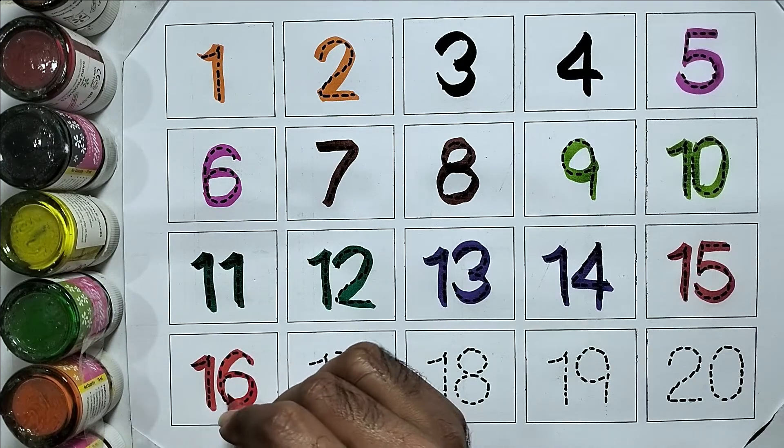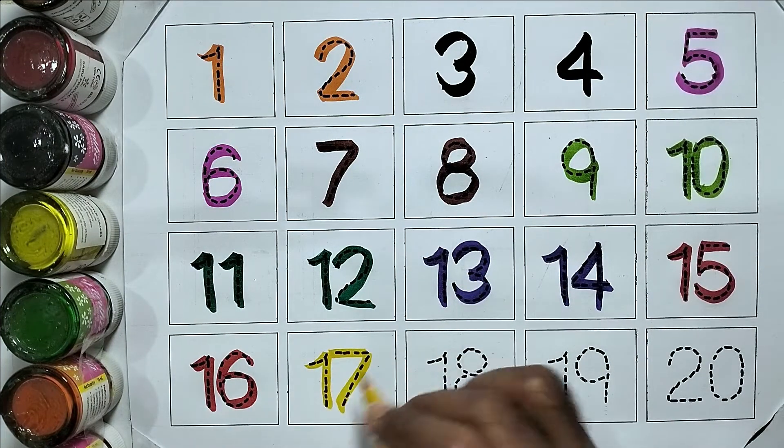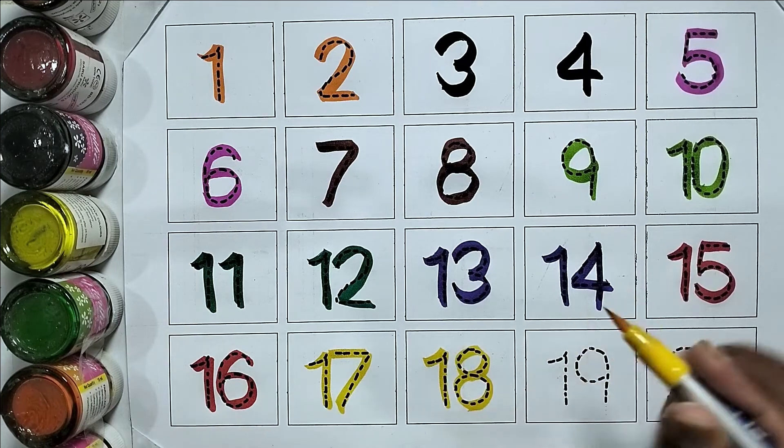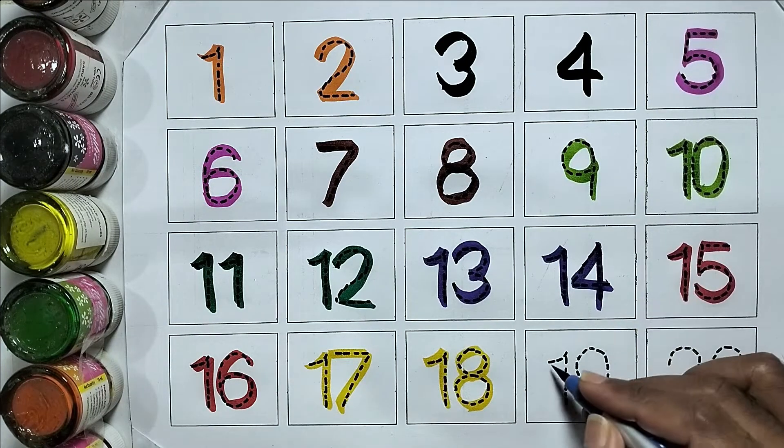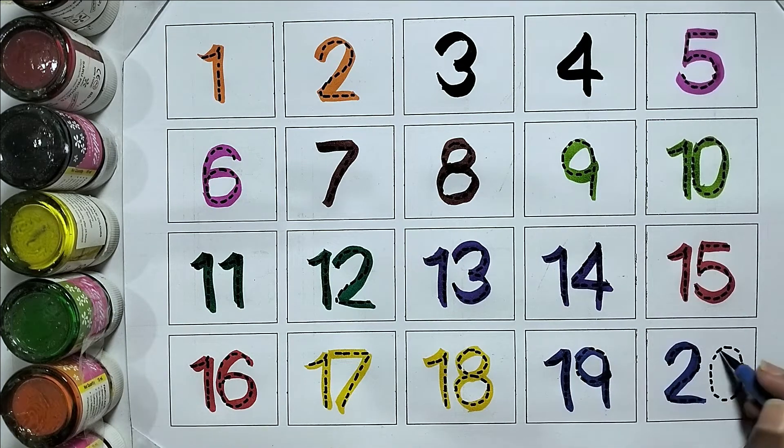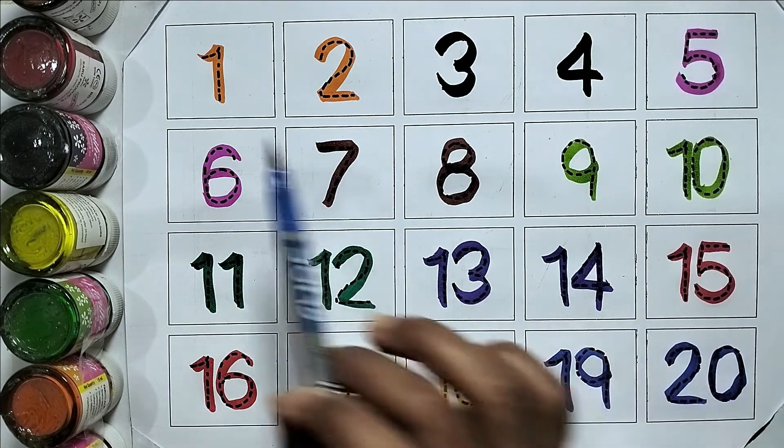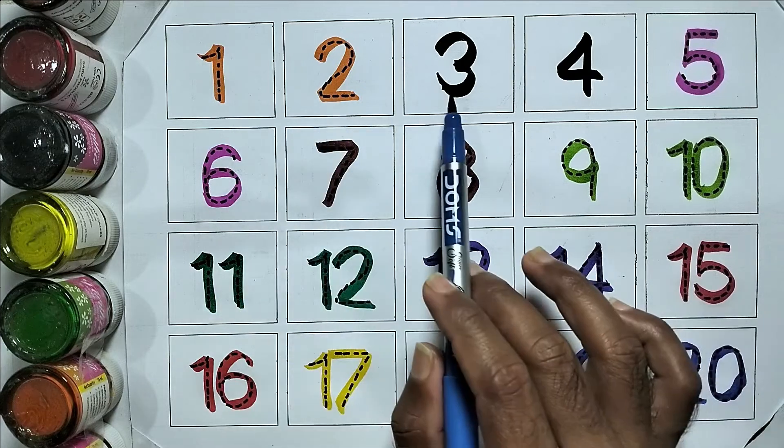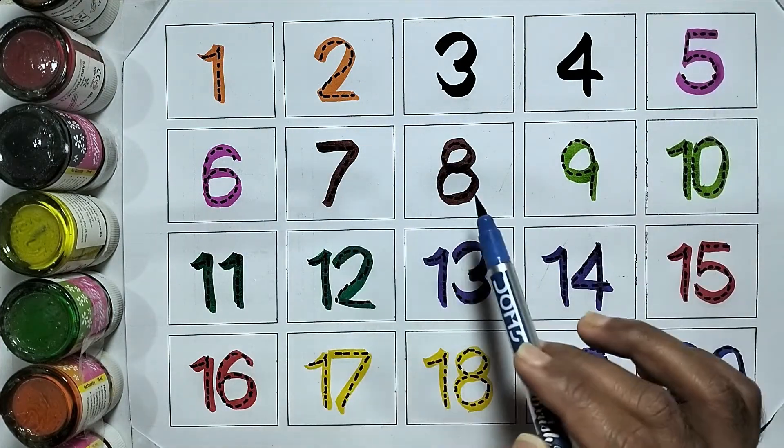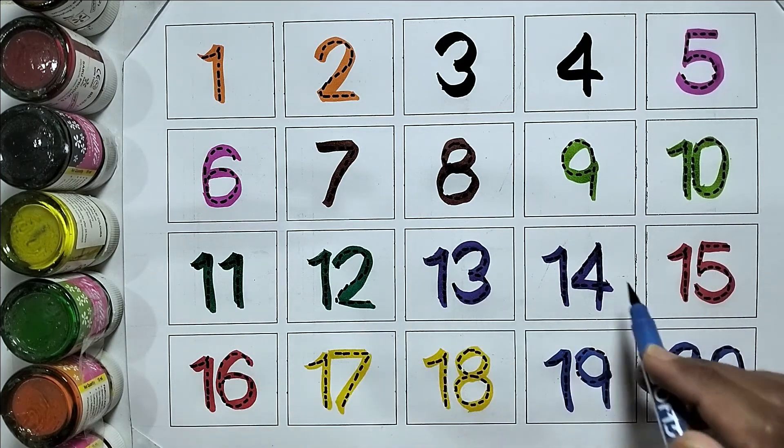16, 17, 18, 19, and 20. Let's say again: 1, 2, 3, 4, 5, 6, 7, 8, 9, 10, 11, 12, 13, 14.